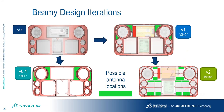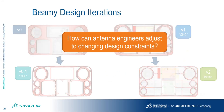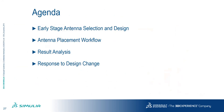Looking at all the different iterations of frames, we can identify possible locations for antennas based on available space. The brief agenda covers: early stage antenna selection and design, then antenna placement workflow — how you go about installing antennas on such a device — followed by result analysis, and finally responses to design changes that could occur during the design cycle.